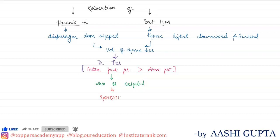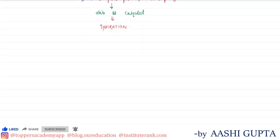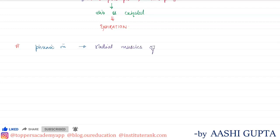This is how the process of expiration occurs. Now, one more important thing: what are phrenic muscles? The phrenic muscles are the radial muscles of the diaphragm.